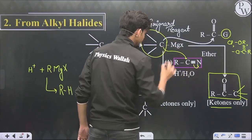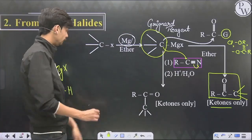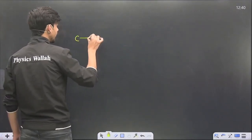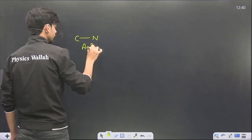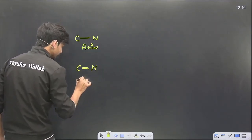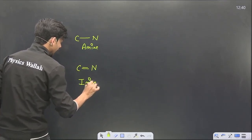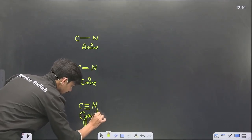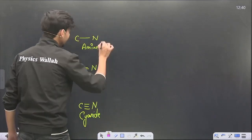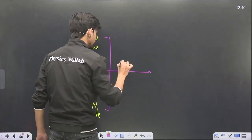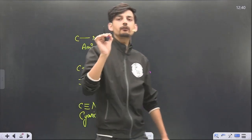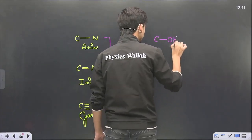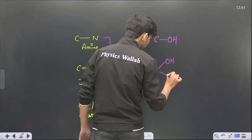Similarly, if we react Grignard with alkyl cyanide, the attack occurs on the carbon; the double bond between carbon and nitrogen is broken and an imine is formed. Remember: C–N single bond is an amine, C=N double bond is an imine, and C≡N triple bond is a cyanide or nitrile. On hydrolysis, each carbon–nitrogen bond is converted into a hydroxyl group.